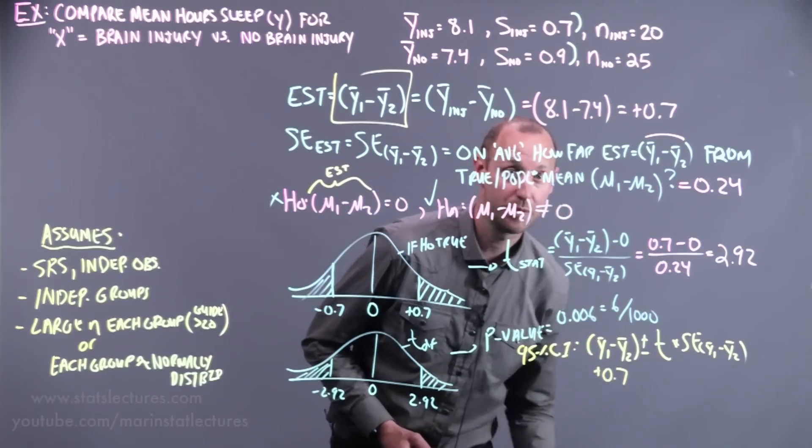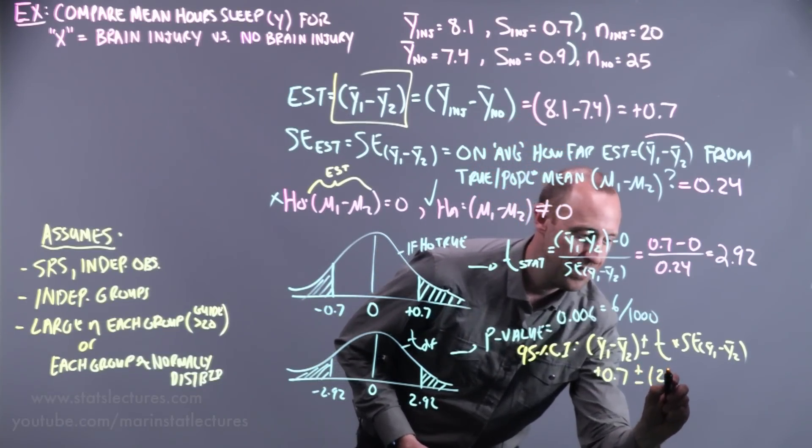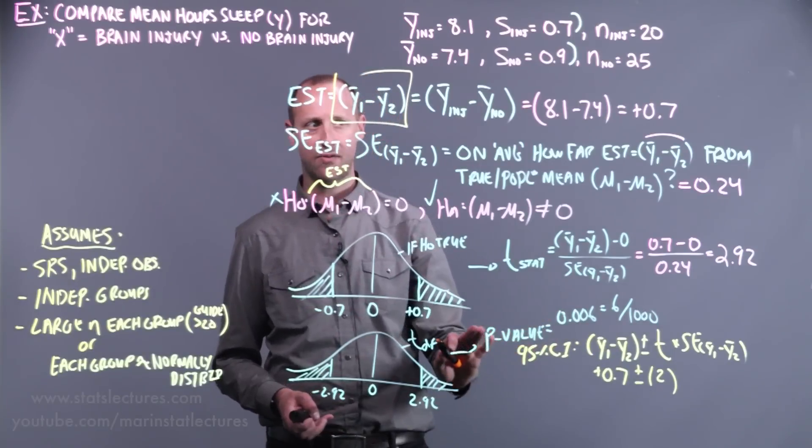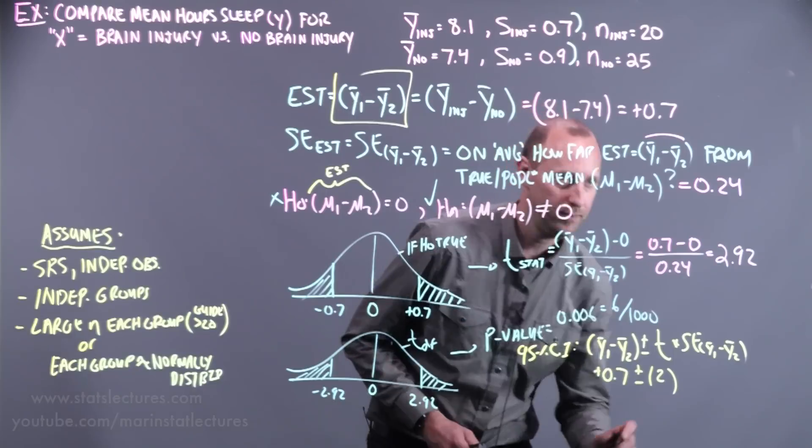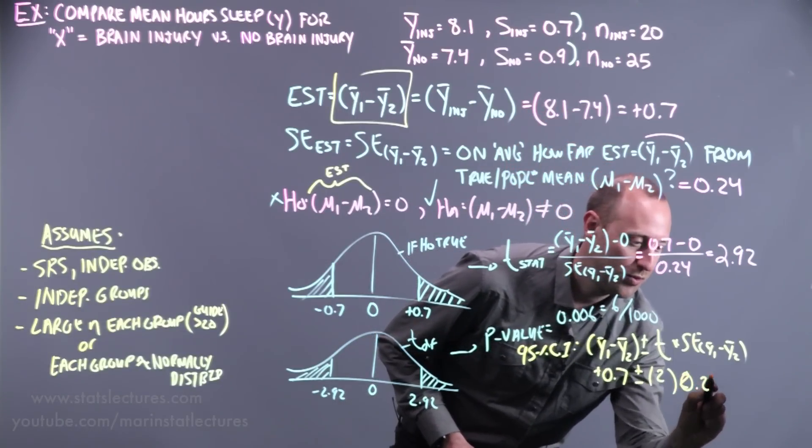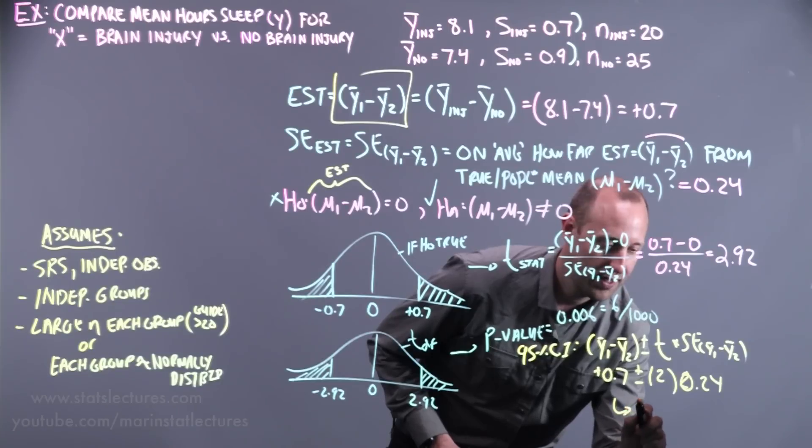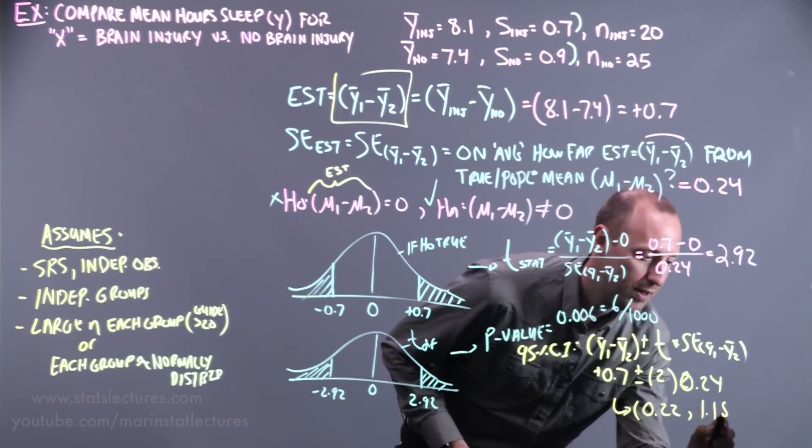If you work that out, our estimate was 0.7 plus or minus, the t-value is roughly 2, so I'll use the rough value of 2. I think somewhere around 2.03 is the exact value, times 0.24. If you work that out, you're going to get a confidence interval 0.22 up to 1.18.